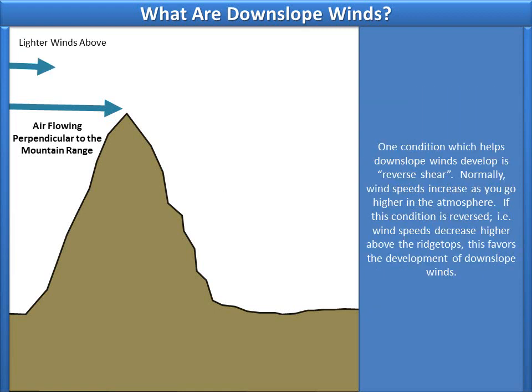One condition which helps downslope winds develop is reverse shear. Normally, wind speeds increase as you go higher in the atmosphere. If this condition is reversed — that is, the wind speeds decrease higher above the ridgetops — this favors the development of downslope winds.